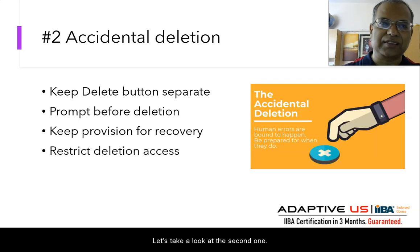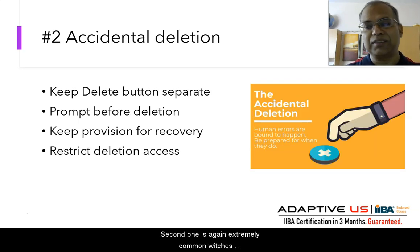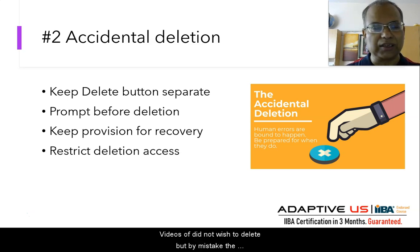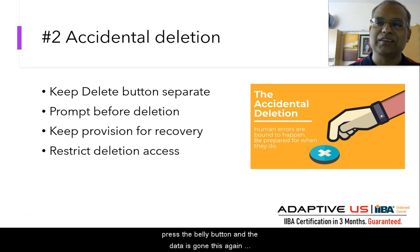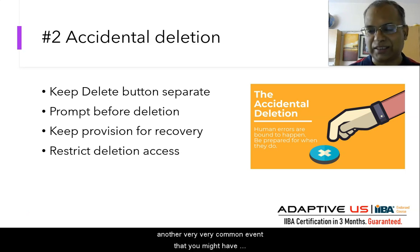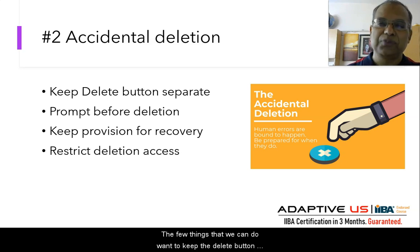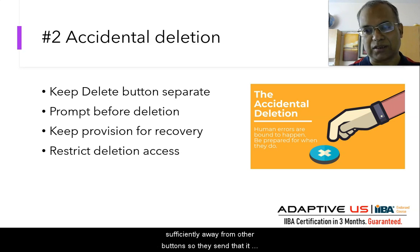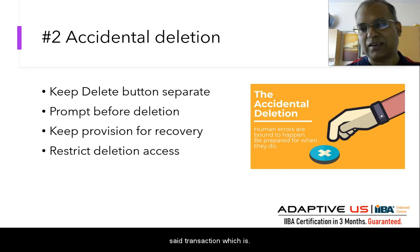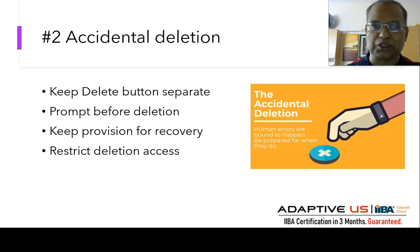The second one is again extremely common, which is accidental deletion. The user did not wish to delete, but by mistake they press the delete button and the data is gone. This is another very common event you might have experienced as a BA. One thing we can do is keep the delete button sufficiently away from other buttons, so that it distinguishes itself as a transaction to be used with caution.